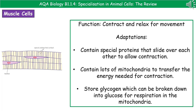Our third and final specialized animal cell is the muscle cell. The whole purpose of muscle cells is to allow for contraction and subsequent relaxation to allow us to move. There are three key adaptations. First, muscle cells are made of special proteins that slide over each other to allow contraction. Second, they contain lots of mitochondria to transfer the energy needed for contraction. Third, they can store glycogen, which can be broken down into glucose and used in respiration in the mitochondria when the cells need to contract.